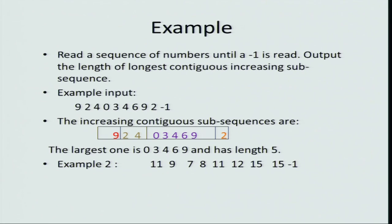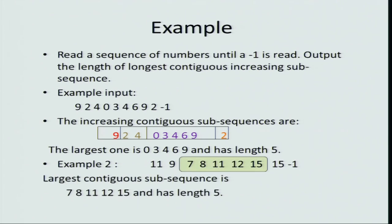Let us take another example: 11 9 7 8 11 12 15 15 and minus 1. So 11 is greater than 9 — that cannot be an increasing sequence. 9 is greater than 7, so that is another break. But then 7 8 11 12 15 are increasing. I decided to stop there because the next number was also 15, and since 15 and 15 are equal, we break it there. So the longest increasing subsequence is 7 8 11 12 15, and its length is 5.